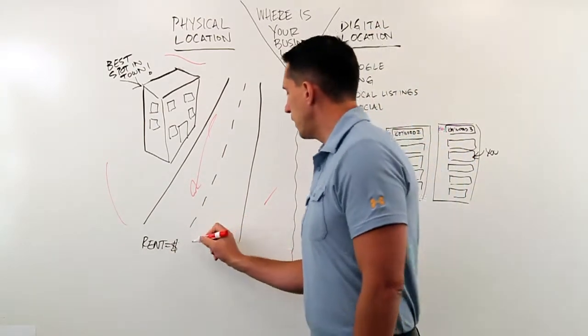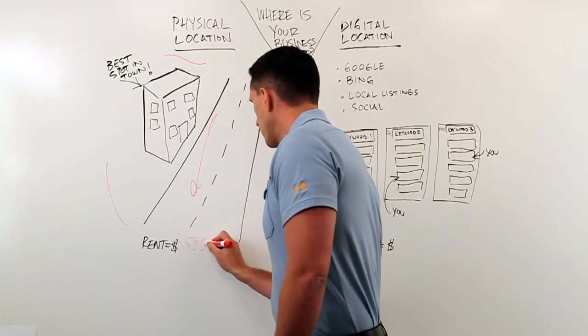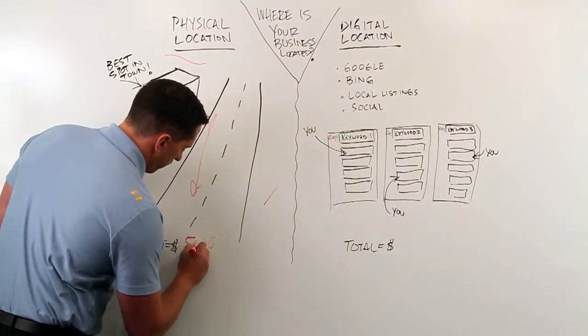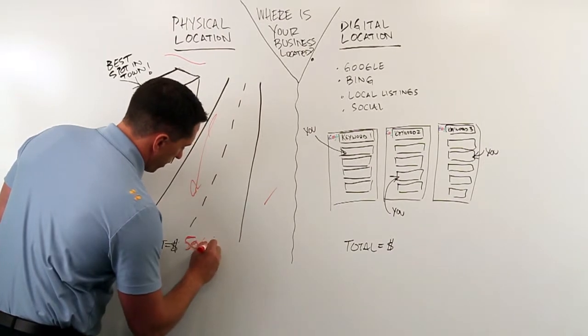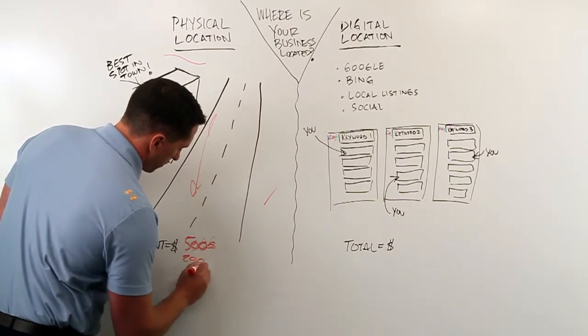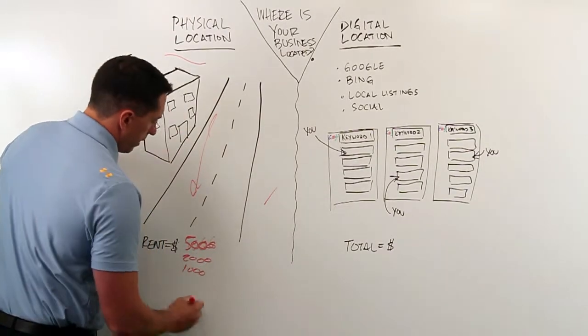Oftentimes, you're spending maybe $5,000 a month in rent - that's pretty common. Maybe you're spending $2,000 or $1,000. That's great, but what are you spending on your digital location?